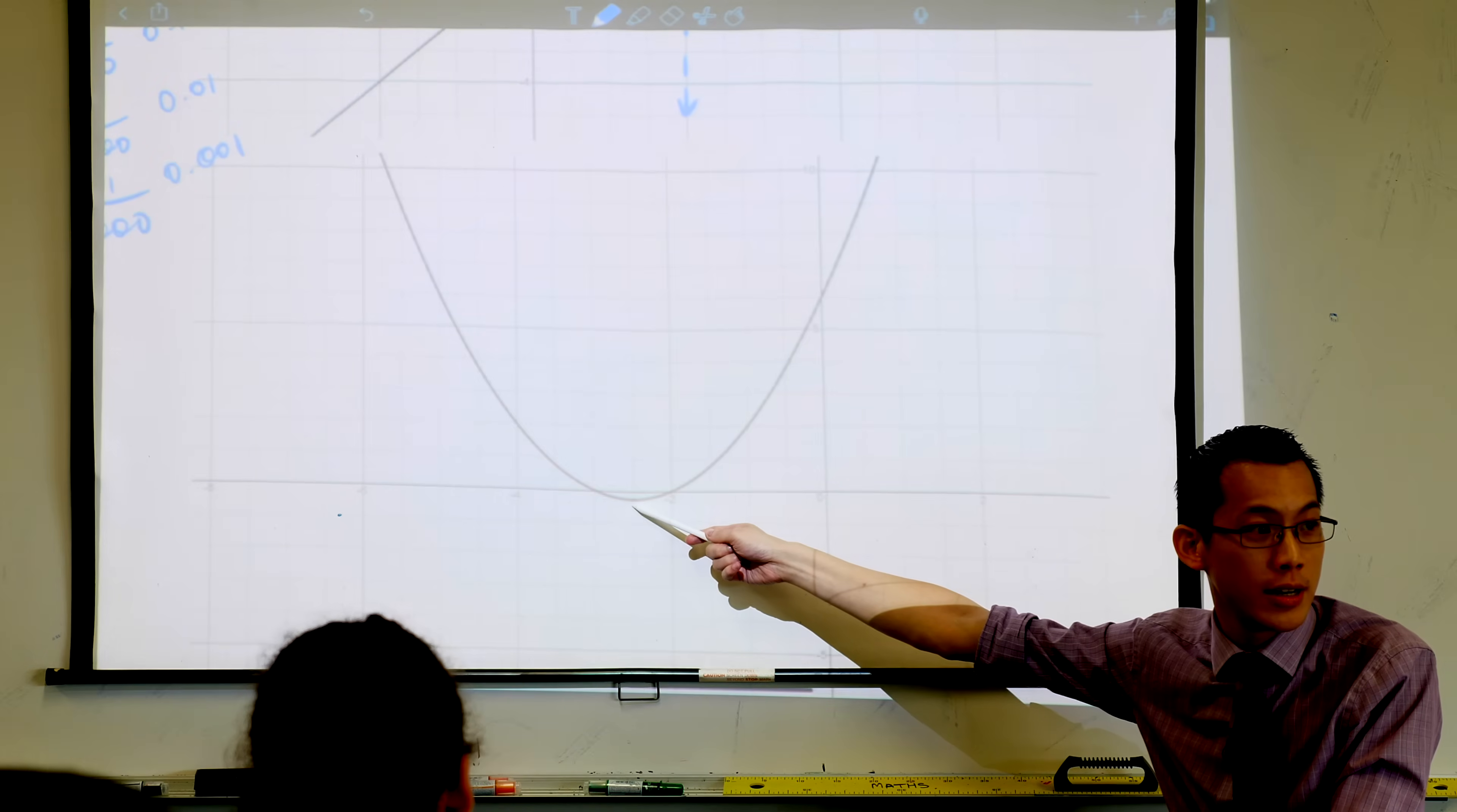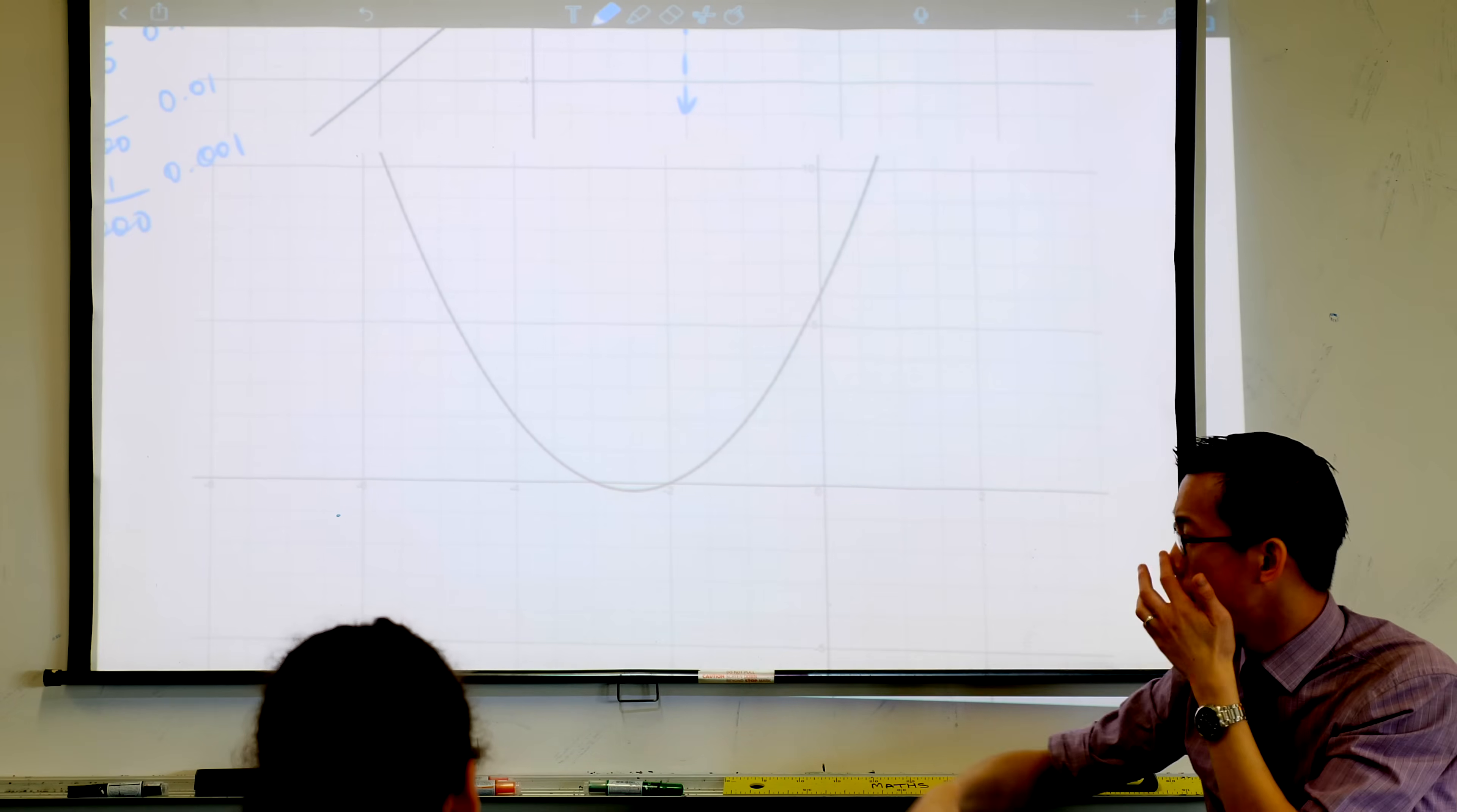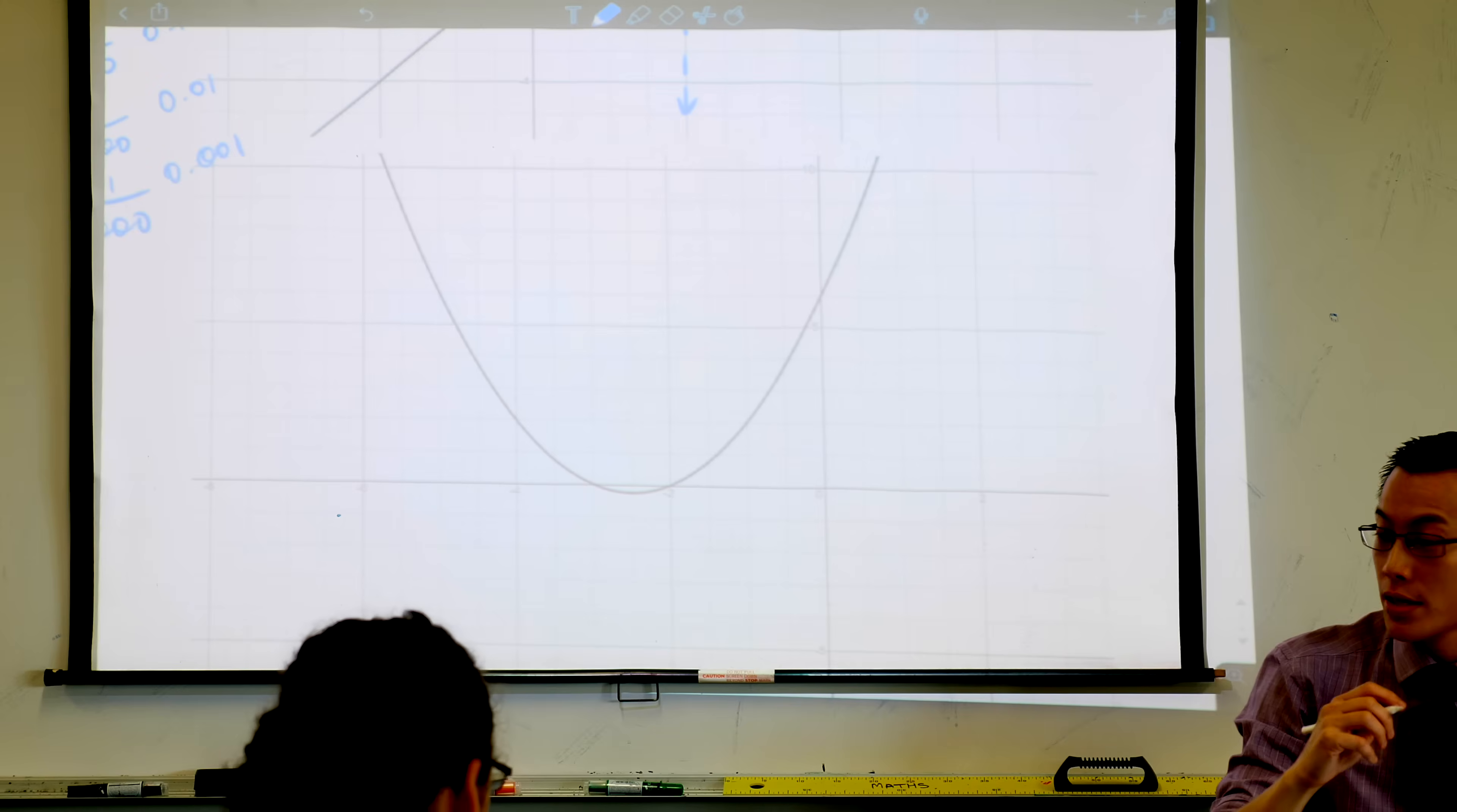I'm only telling you that so you actually know what some of these values are. For example, that vertex, you know exactly where it is. What's the y value? It's negative a quarter, right? Negative 0.25. So can you tell me what is the reciprocal of negative a quarter? It's negative 4, isn't it?